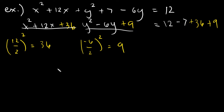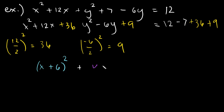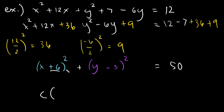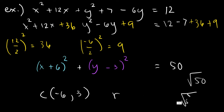Factor out both trinomials. This gives x plus 6 squared plus y minus 3 squared. On the other side: 12 minus 7 plus 36 plus 9 equals 50. So we have x plus 6 squared plus y minus 3 squared equals 50. The center is at negative 6, positive 3 — reversing the signs. The radius is the square root of 50, which equals the square root of 25 times 2, giving 5 square root of 2.